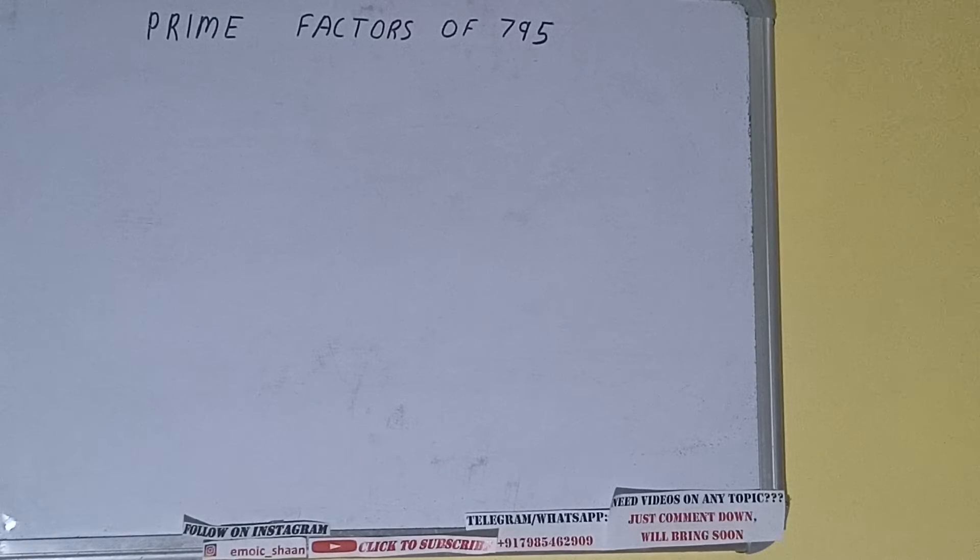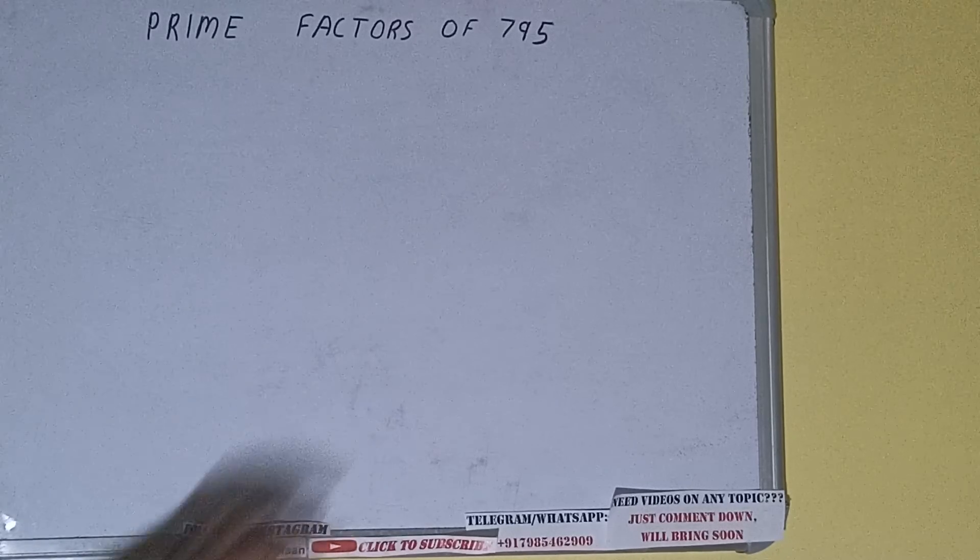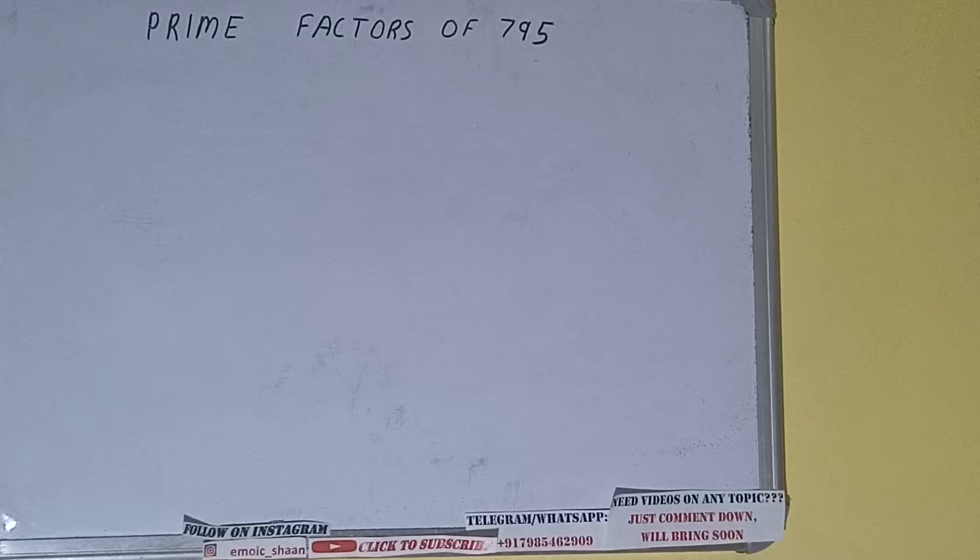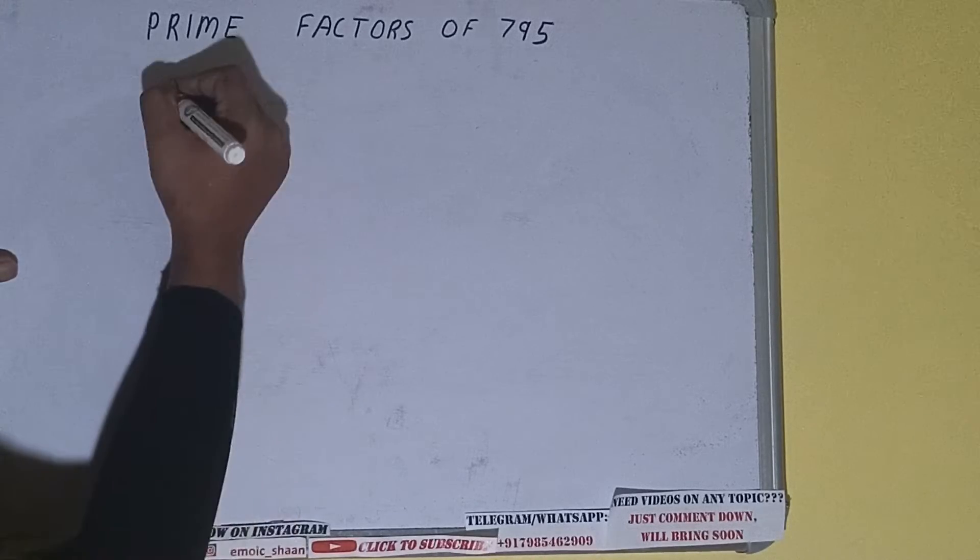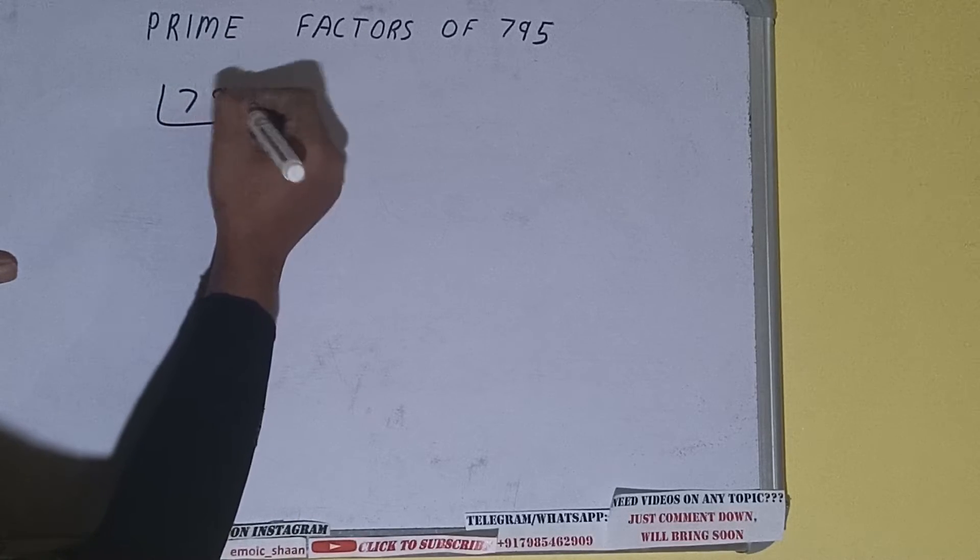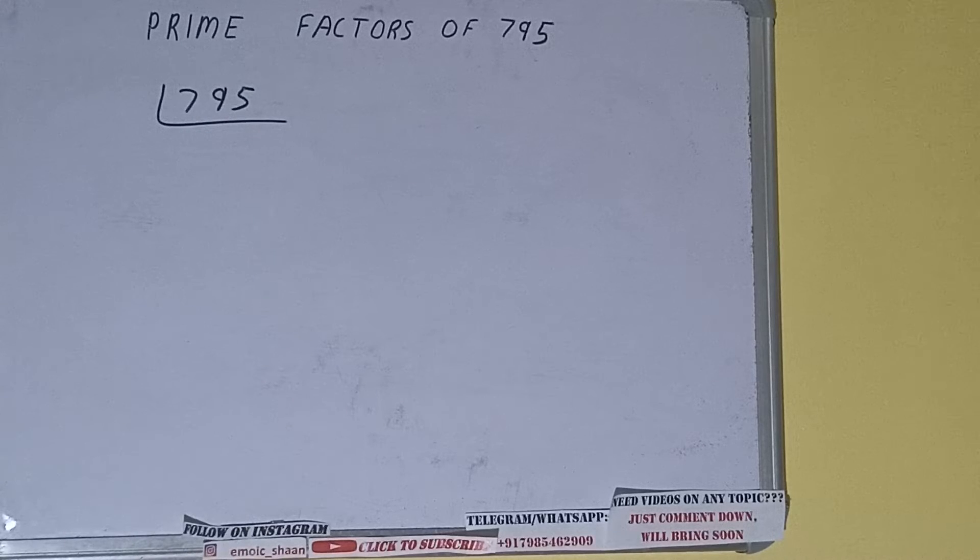Hello friends, in this video I'll be helping with the prime factors of the number 795. So let's start. First of all, we need to write the number like this. The next thing we need to know about is what are prime numbers. Prime numbers are numbers that are divisible by one and the number itself, like 2, 3, 5, 7, and so on.